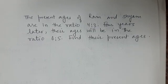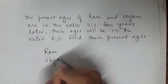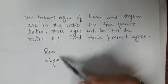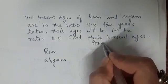In this question you see that there are two persons, Ram and Sham, and it is given that the ratio of their present ages...